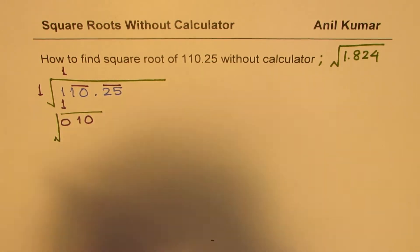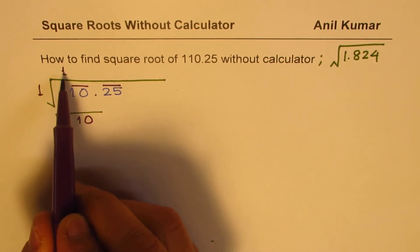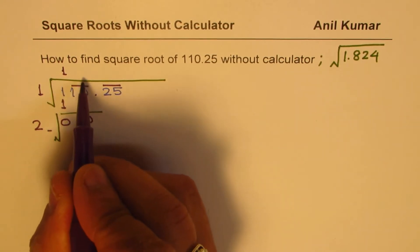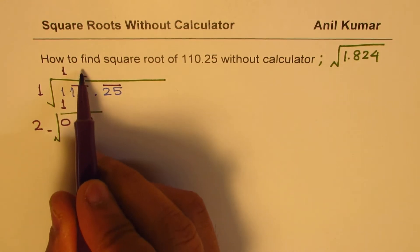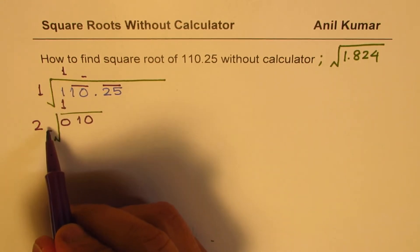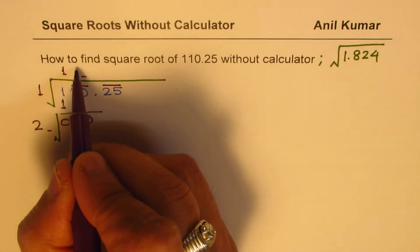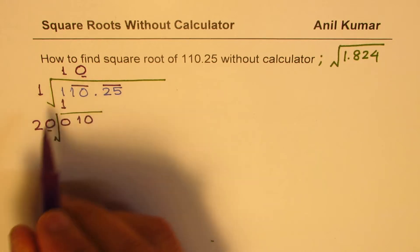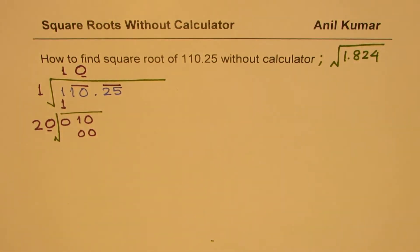And repeat this process of finding the square root. Now this time, when you are doing it for the second time, you have to double the quotient here. Quotient is 1, make it 2. And now we are looking for another number in the second place. If I place 1 here, I get 21 which is more than 10. So I cannot write 1. I have to go with 0.